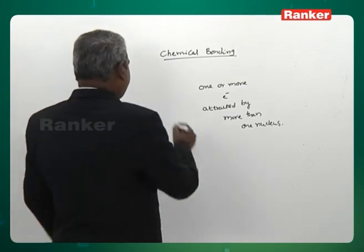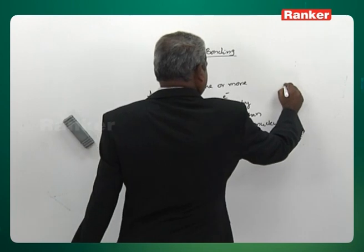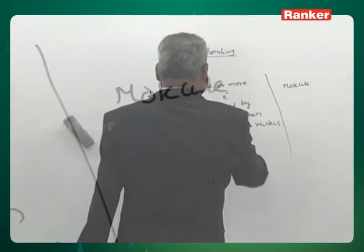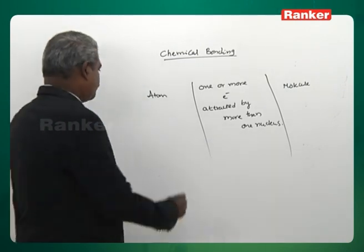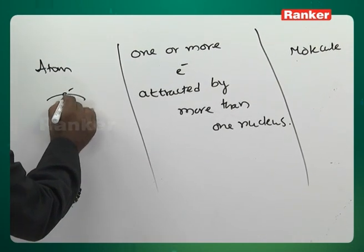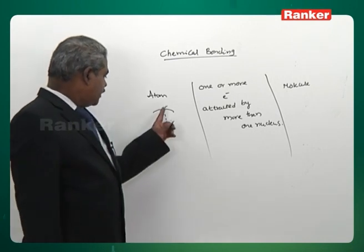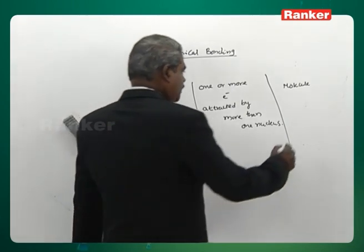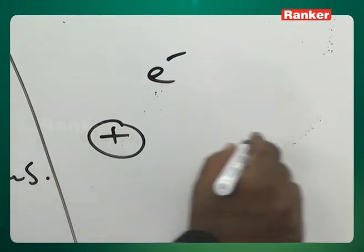What is the essential difference between an atom and a molecule? In an atom, you have only one nucleus attracting electrons — electrons are under the influence of one nucleus only. In a molecule, the electrons are under the influence of more than one nucleus.